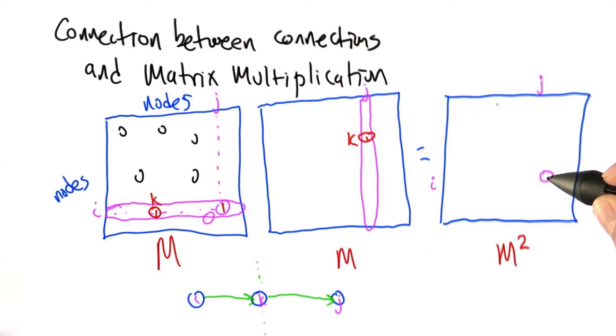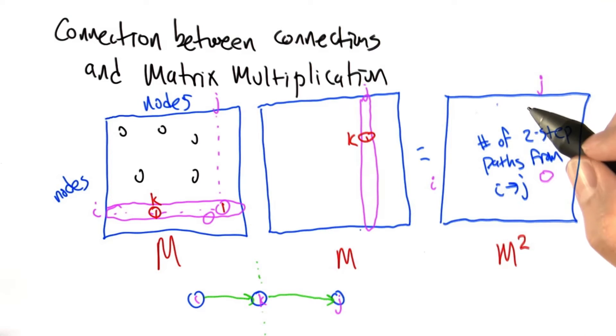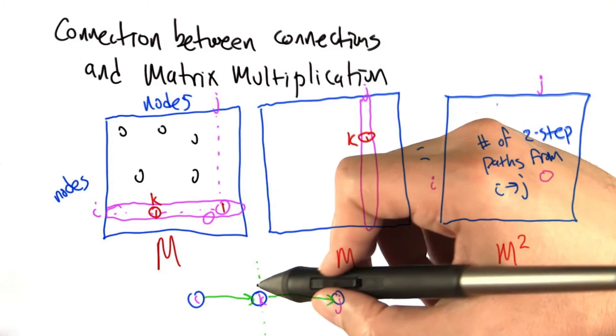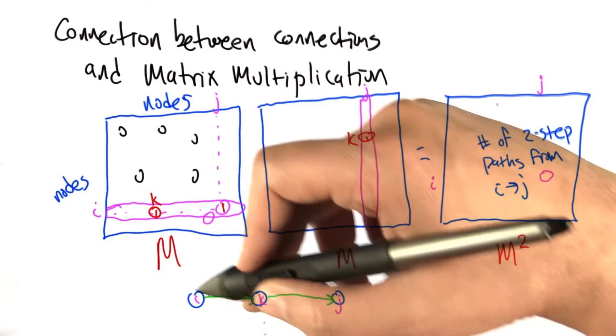So this value here is going to be filled in with precisely the number of two-step paths from i to j, which is exactly what we needed in that other example, that we're basically counting up the comic books that are in common between some character i and some character j.